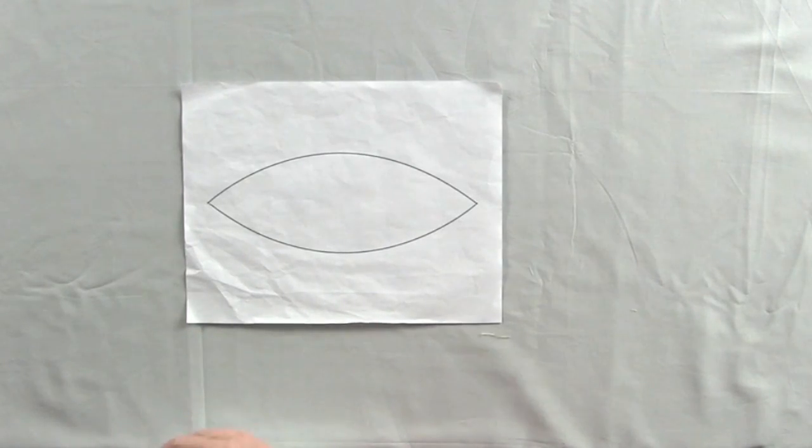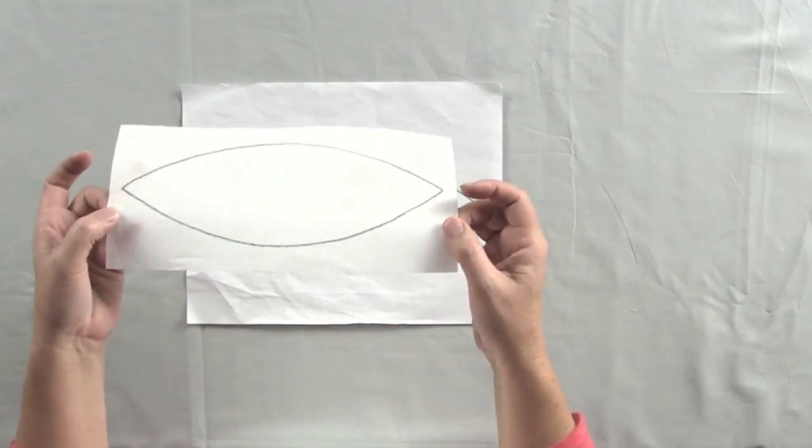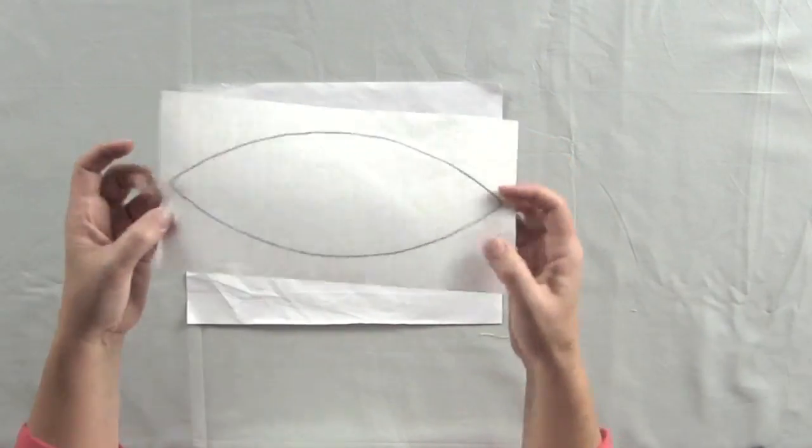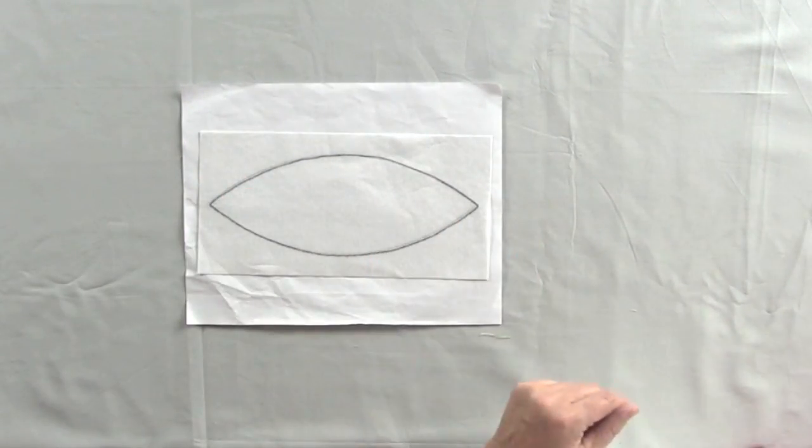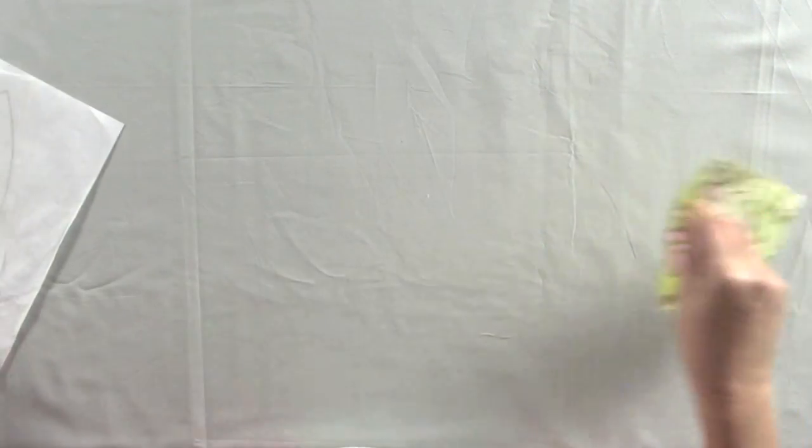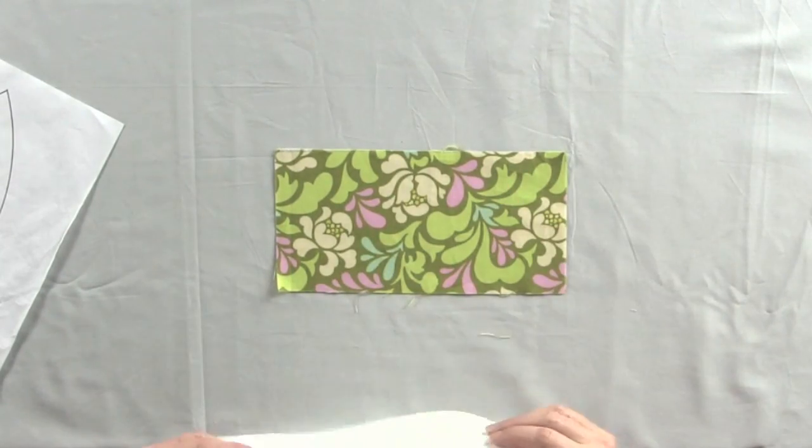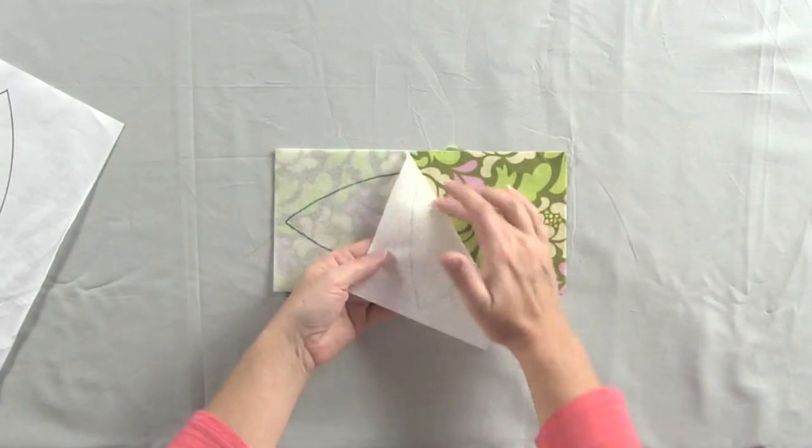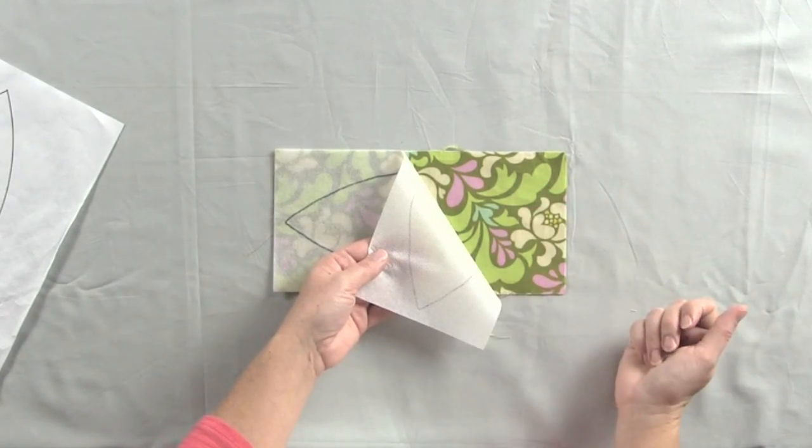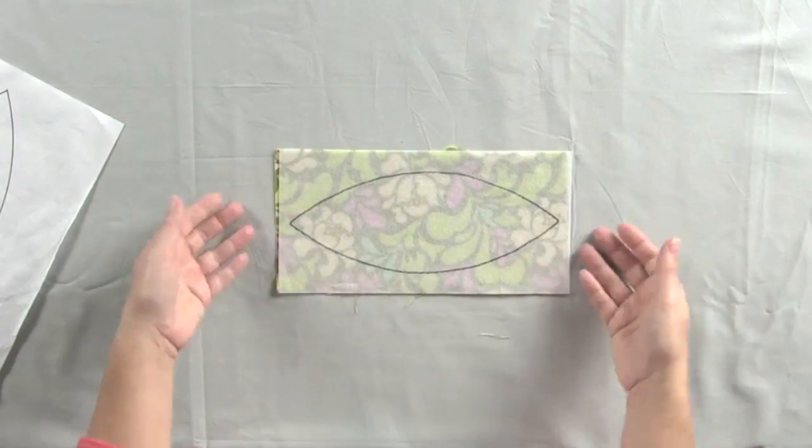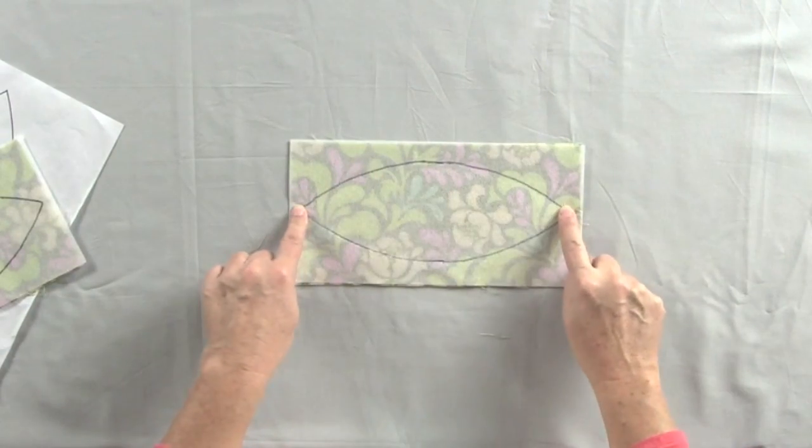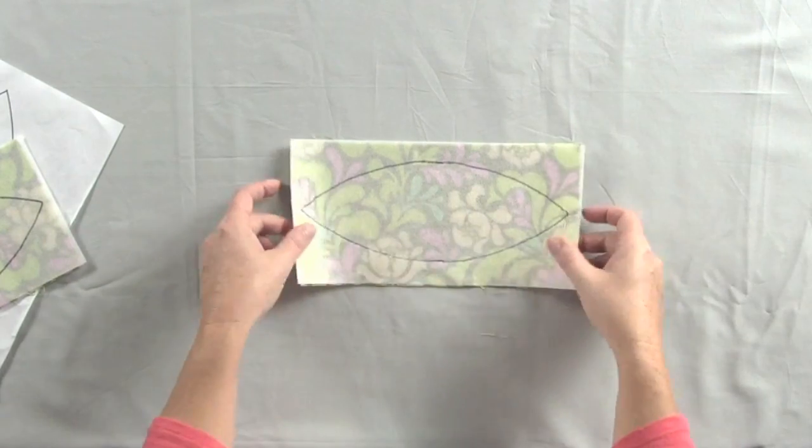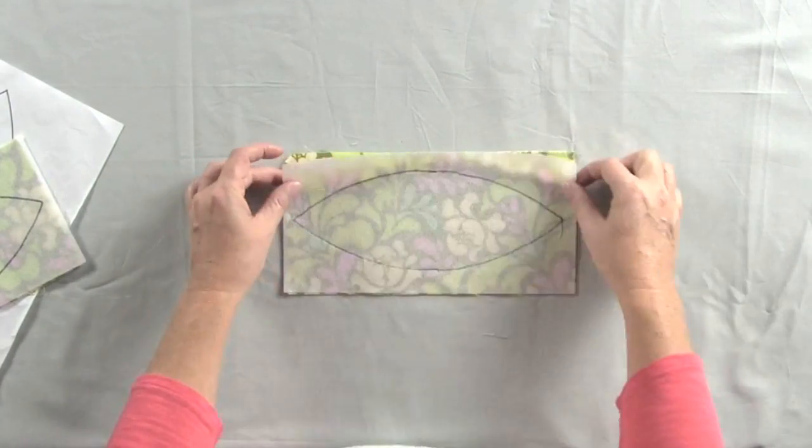Once you have selected your stabilizer, you're going to take your applique shape, and you're going to take your either copied or traced piece of lightweight fusible interfacing that you've traced off of your pattern. Then, you're going to put that piece of interfacing directly on a piece of fabric. And you want the glue side to be facing the right side of the fabric. Once you do that, you're going to sew a line directly on your drawn line to connect the two pieces.